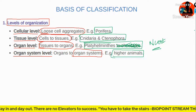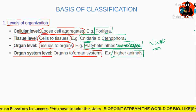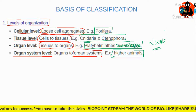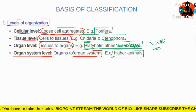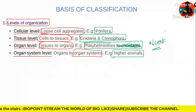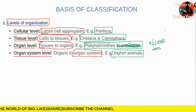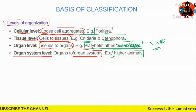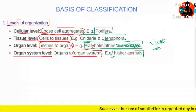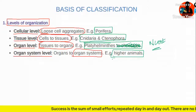To summarize: cellular level in Porifera, tissue level in Cnidaria and Ctenophora, organ level in Platyhelminthes, and organ system level in higher animals. Thumbs up on the chat box if that's clear.